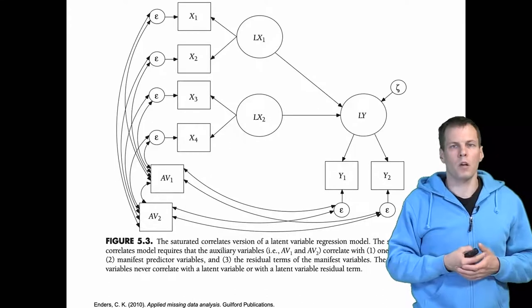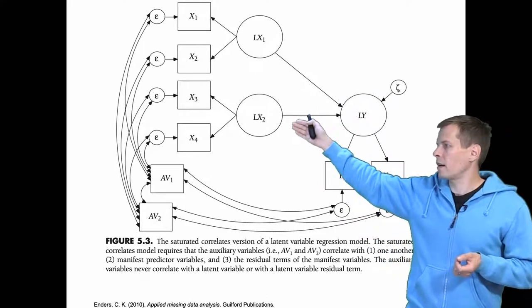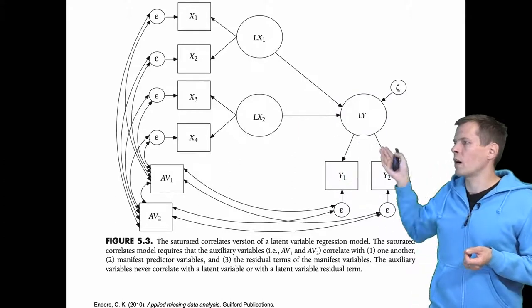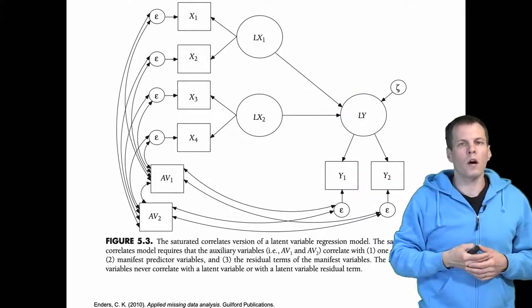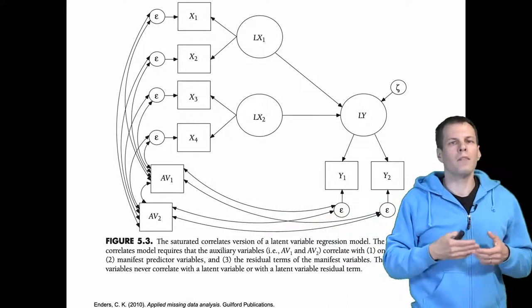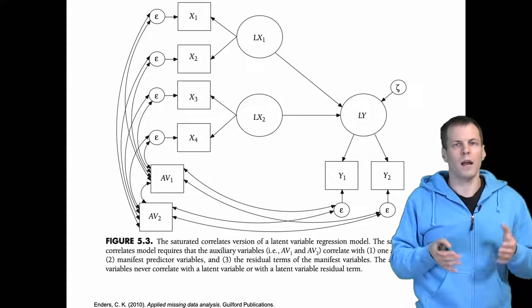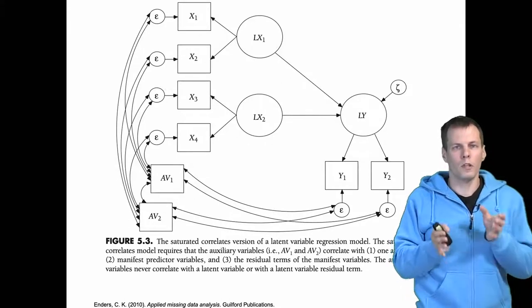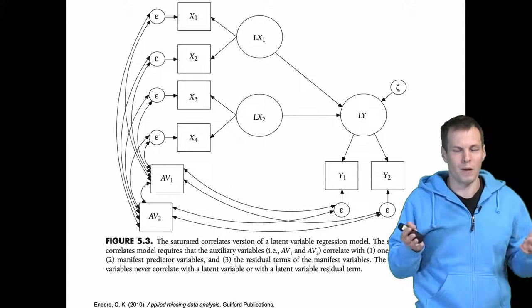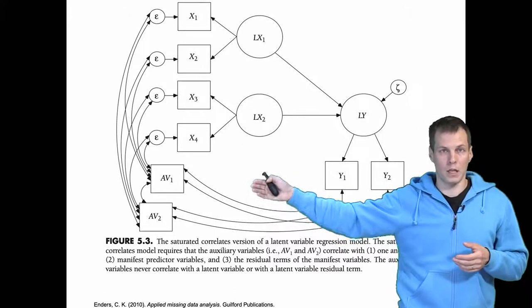In more complex models, if we have a latent variable model of the same, so we have our latent X1, latent X2, latent Y, then we need to add these auxiliary variables and we have every correlation with auxiliary variable and the error terms of the observed variables to be freely correlated. Of course the auxiliary variables are freely correlated with themselves too.